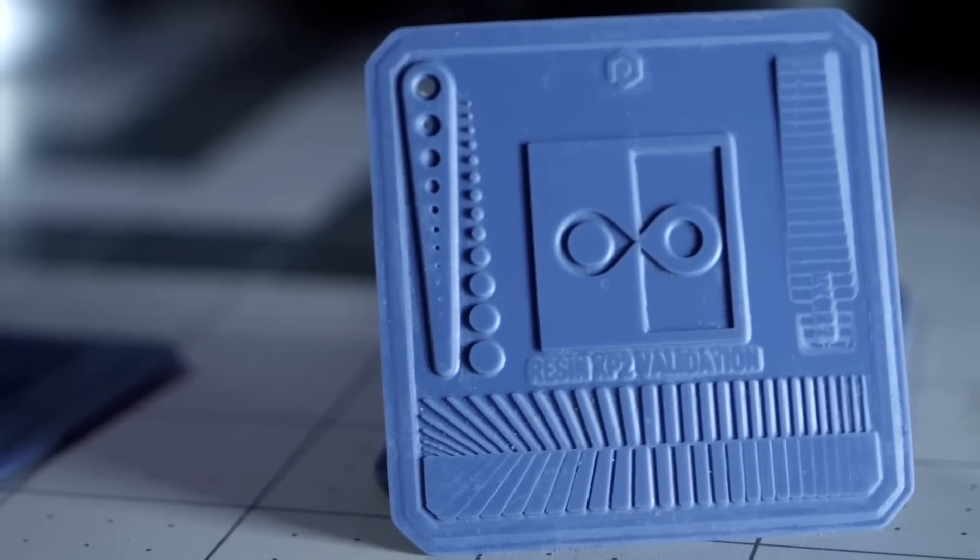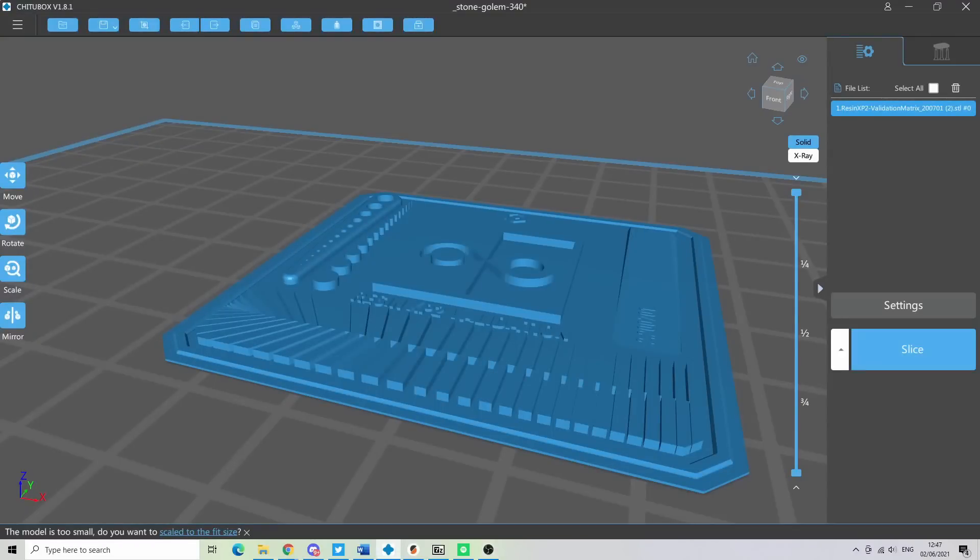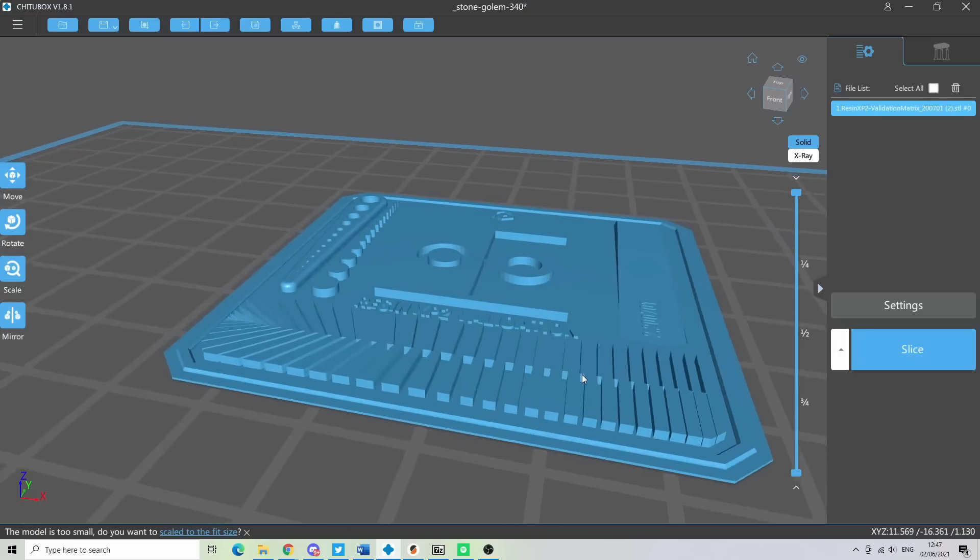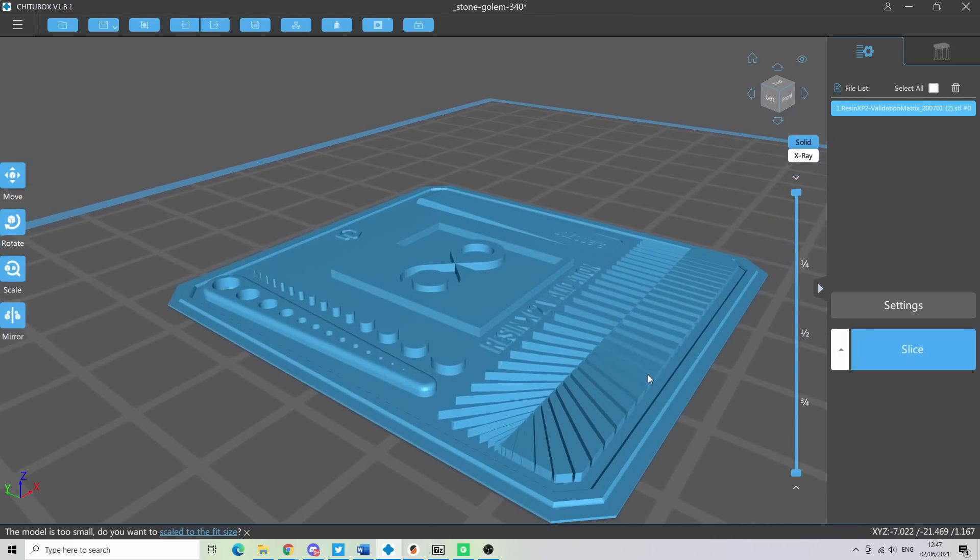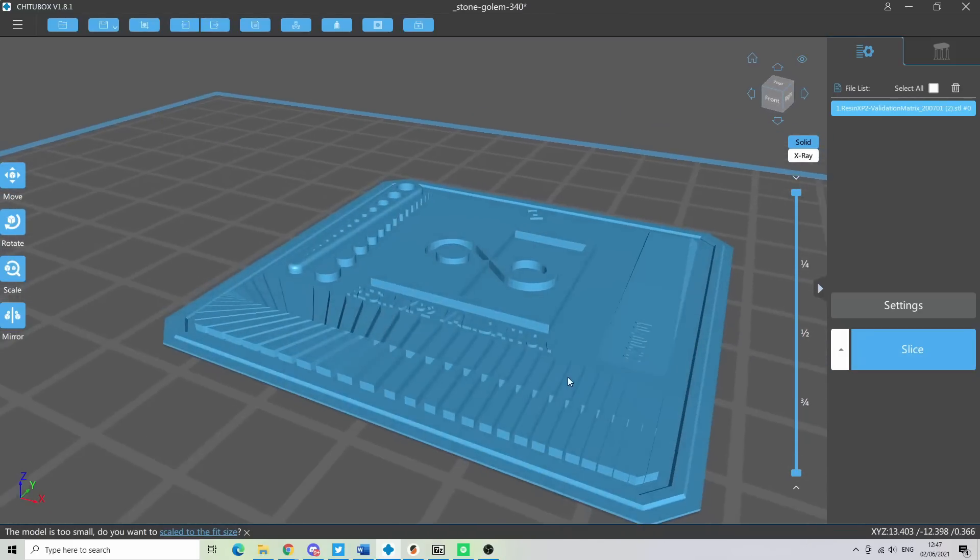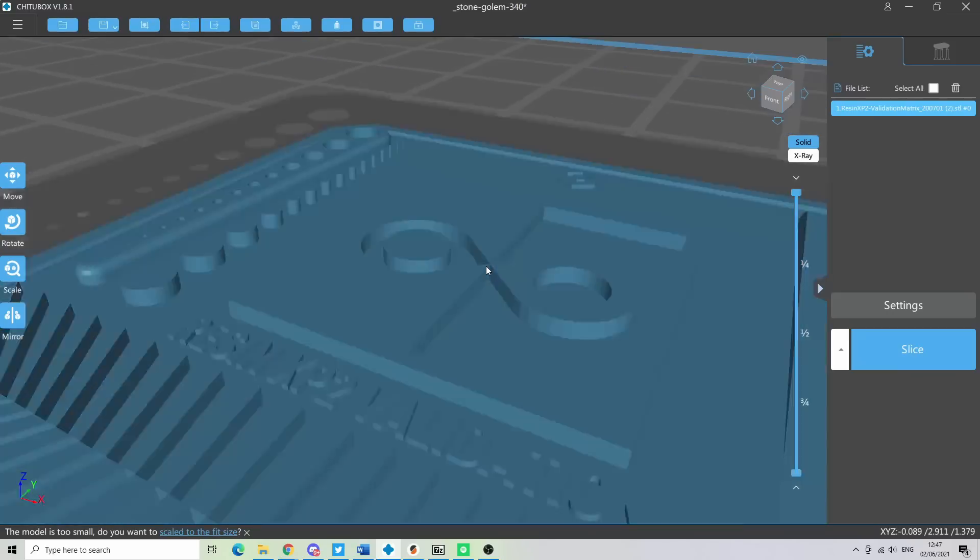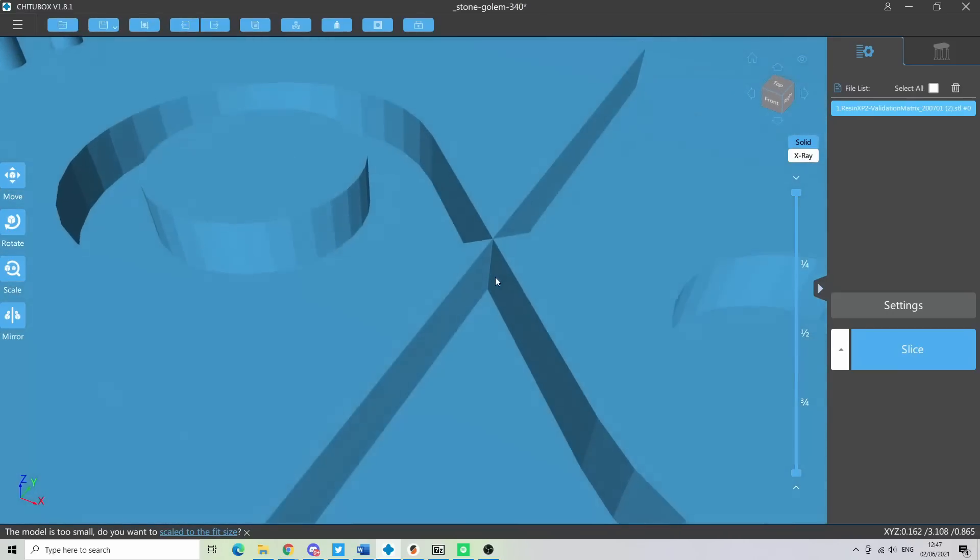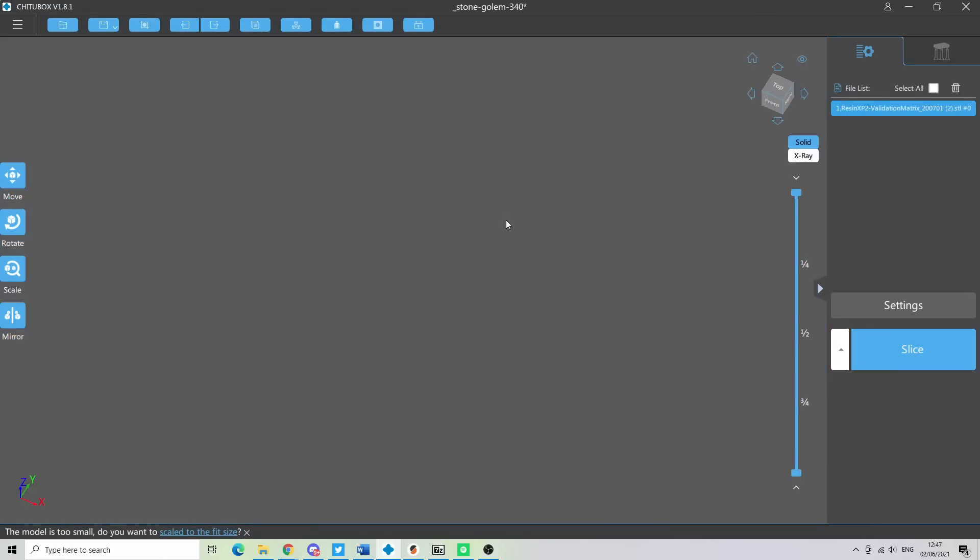Essentially, what you are looking for when dialing in the XP2 is to recreate as much as possible a one-to-one replica of how the model file looks like in the slicer. With real-life limitations, of course, meaning that it can never be perfect, especially on MSLA printers, but it can get close and that's what we are after.